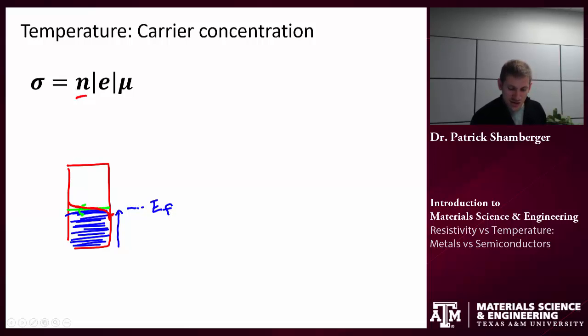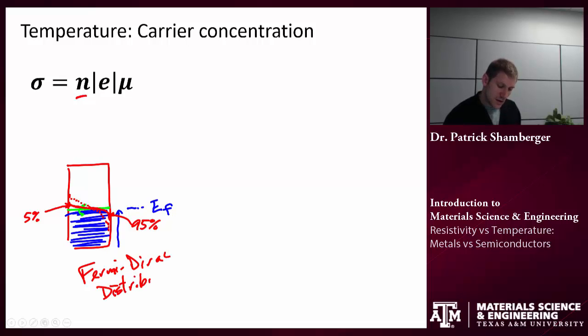So at some energy a little bit below the Fermi level, maybe I have a 95% chance of occupying it. At some energy a little bit above, maybe I have a 5% chance of occupying it. The larger the temperature is, the more smeared out this distribution becomes. So this is called the Fermi Dirac distribution. And basically it's talking about what are the energy levels that the electrons will actually occupy at some finite temperature. The important thing to remember here is that the higher the temperature is, the more smeared out that occupancy will be.